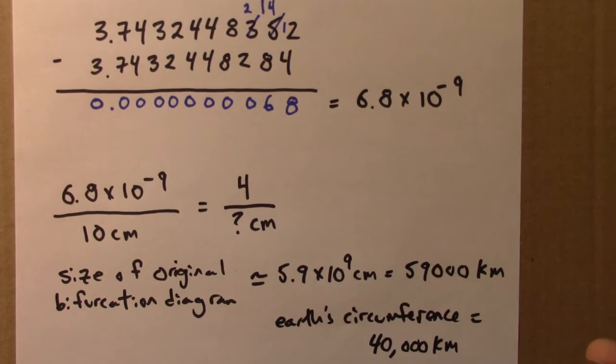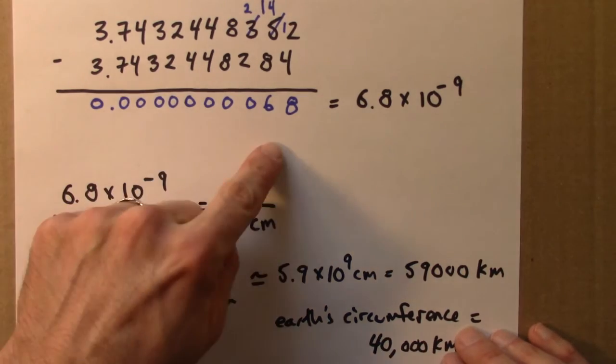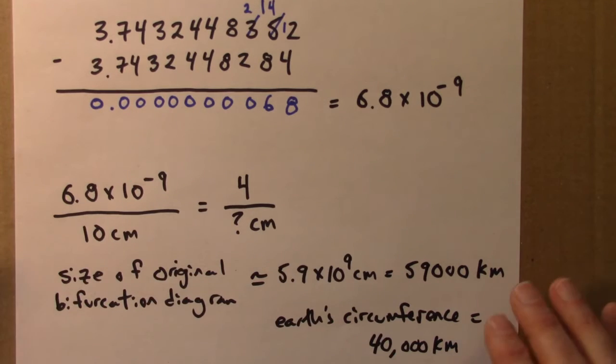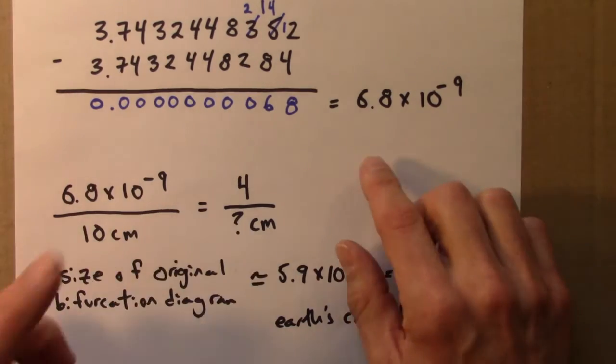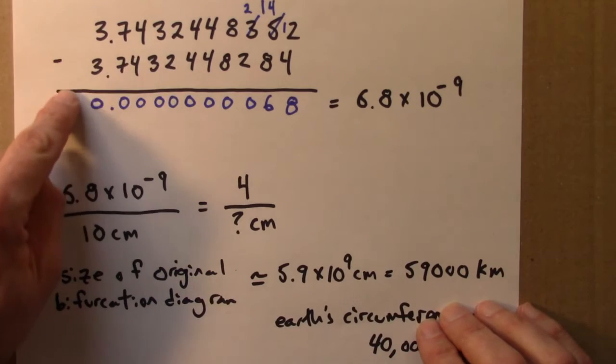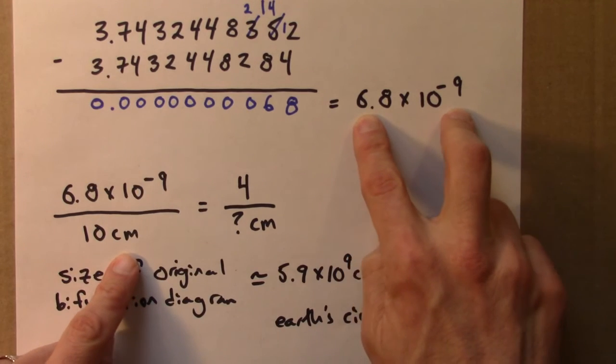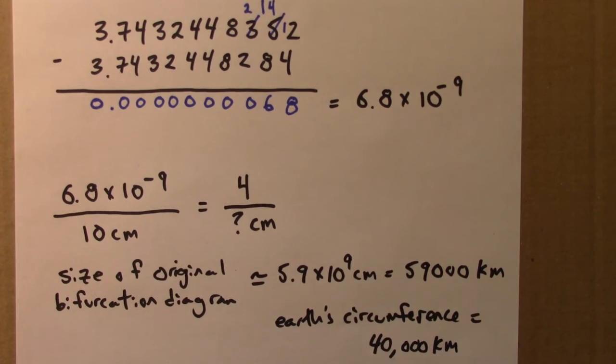So to recap, what this means is we started with a bifurcation diagram that went from 0 to 4, and we zoomed in again and again and again. And we kept seeing this pitchfork structure, these branches that split into branches that split into branches. We saw that at different places in the bifurcation diagram. And we kept zooming in and zooming in and zooming in until we saw one of those pitchforks, one of those splittings over this very, very tiny range of R values. And at that point, we'd zoomed in enough that the original diagram would have gotten so large that it would have stretched around the Earth's circumference. So we're zooming in an almost unimaginable amount into this mathematical object, this bifurcation diagram, and we're seeing these structures repeat again and again and again.